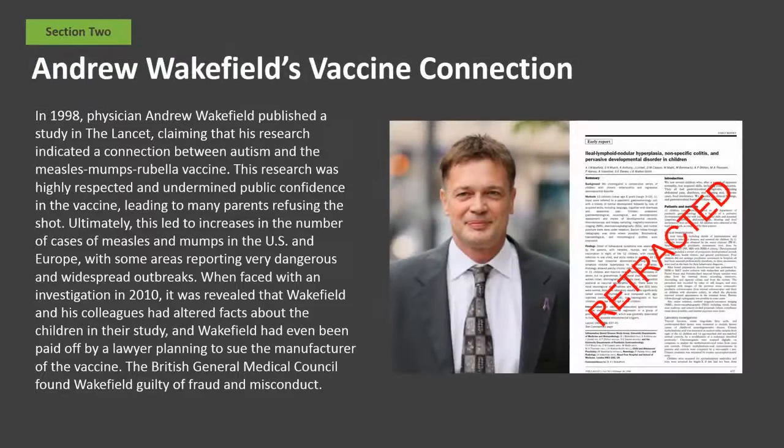In 1998, physician Andrew Wakefield published a study in The Lancet, claiming that his research indicated a connection between autism and the measles-mumps-rubella vaccine. This research was highly respected and undermined public confidence in the vaccine, leading to many parents refusing the shot. Ultimately, this led to increases in the number of cases of measles and mumps in the U.S. and Europe, with some areas reporting very dangerous and widespread outbreaks.